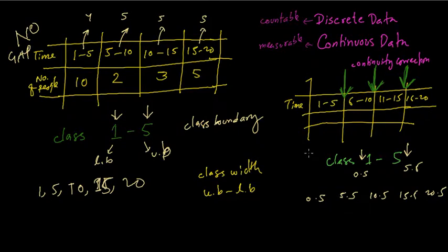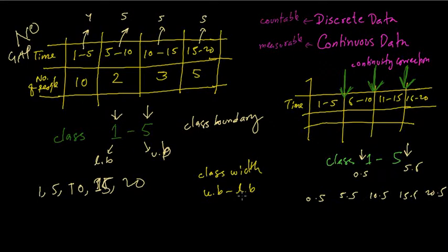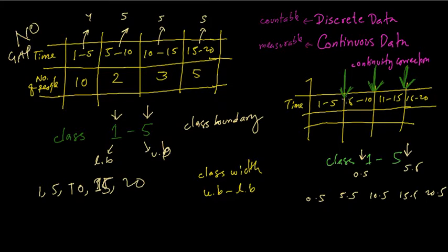You need to remember whether the class boundary has gaps or no gaps in the data, and based on that, determine the class boundaries. Since class boundary and class width are connected, when there is a gap the class width uses the corrected boundaries: 5.5 minus 0.5, 10.5 minus 5.5, 15.5 minus 10.5, 20.5 minus 15.5 — all requiring continuity correction.